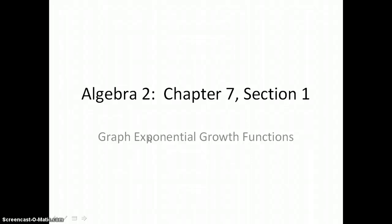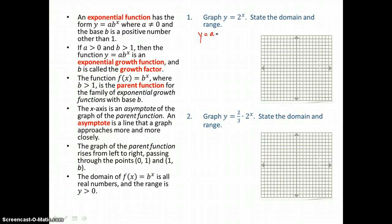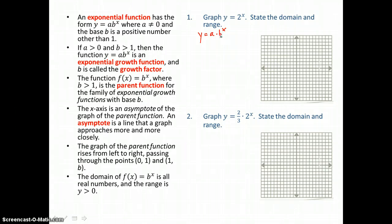In Lesson 7.1, you will graph exponential growth functions. The first one we're going to graph is y equals 2 to the x power. This equation is of the form y equals a times b to the x power. You can see that our a value is 1 and our b value is 2 in this equation. When b is greater than 1, we know that we're graphing exponential growth.